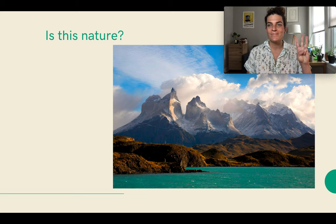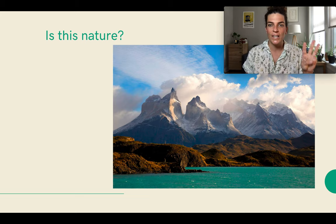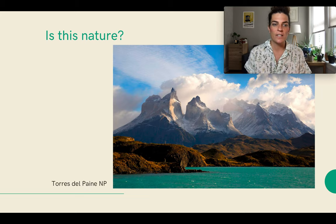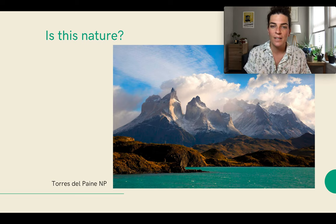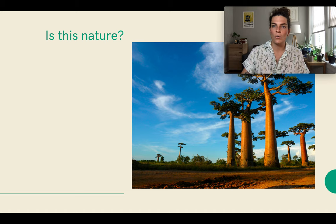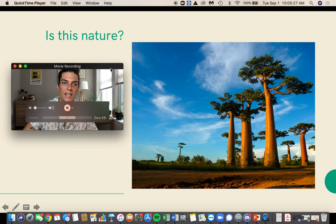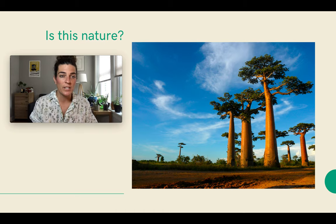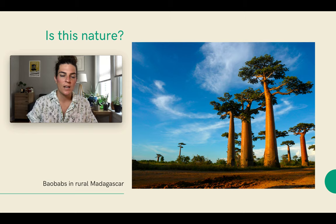Third picture — is this nature? Do you think that this picture is depicting nature? This is the Torres del Paine National Park in Patagonia, Chile and Argentina. How about this — is this picture, in your estimation, nature? This is, of course, the famous baobab trees in rural Madagascar.